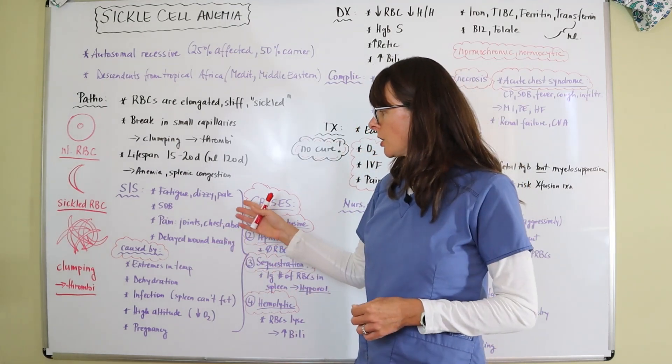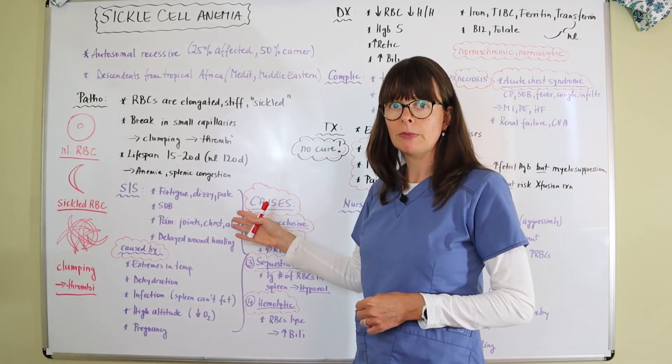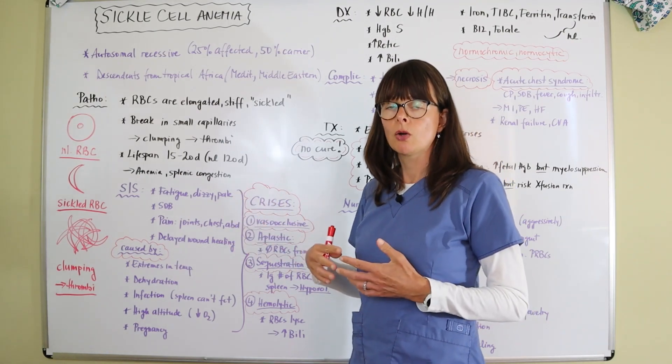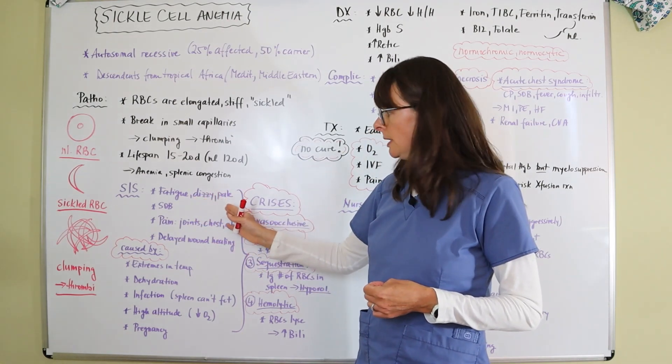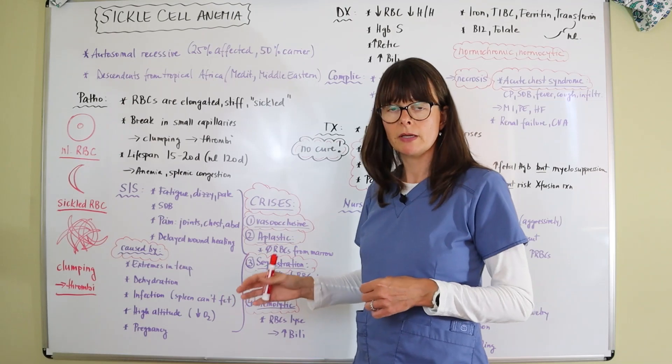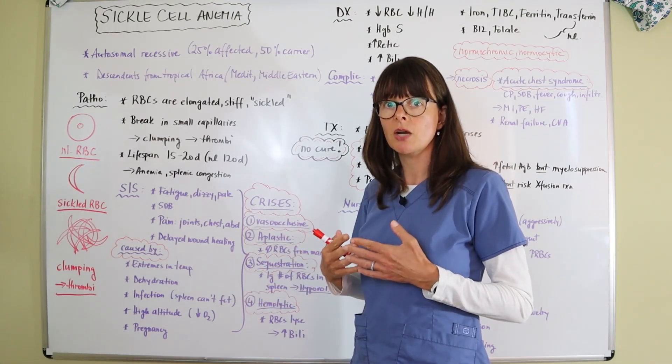Signs and symptoms are similar to those of any type of anemia where the patient has a low red blood cell count. They will be fatigued, dizzy, probably pale, and then shortness of breath can also happen as that air hunger kicks in because we don't have that oxygen carrying capacity.